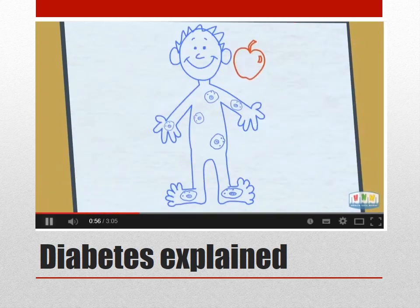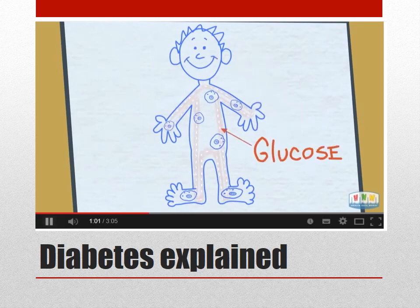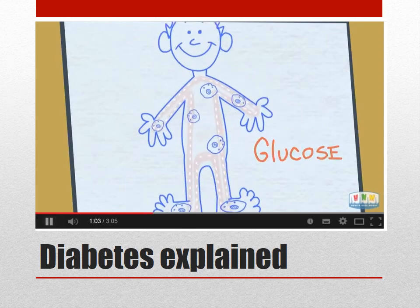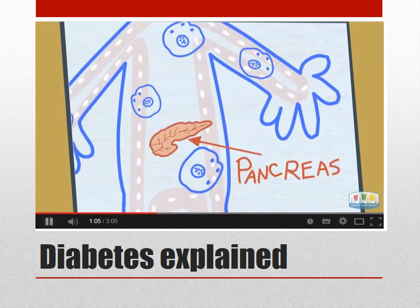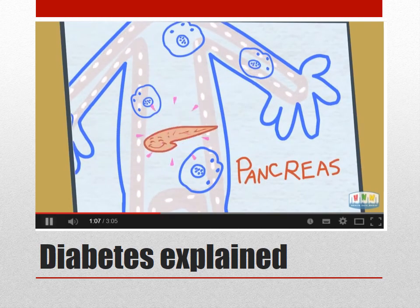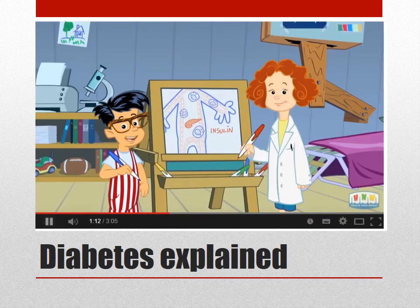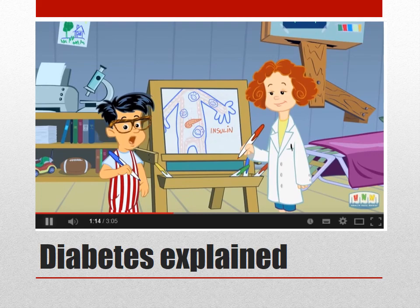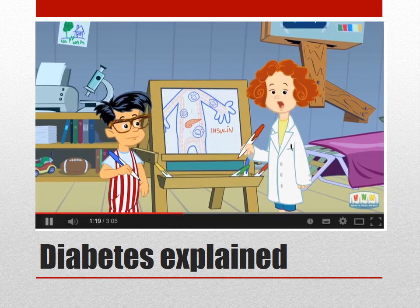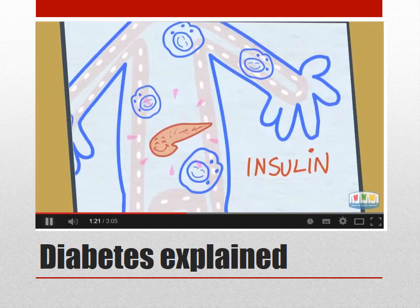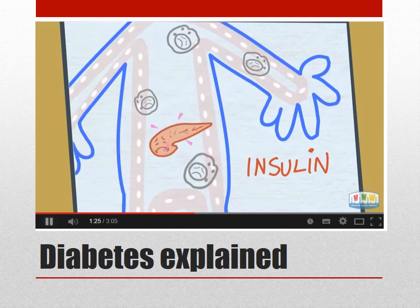The food you eat is turned into sugar called glucose, and glucose travels to all of your cells through the bloodstream. Inside your body is an organ called the pancreas. The pancreas makes insulin, which helps all those cells in your body use the glucose. Your cells need the glucose to grow and get the power they need. If you have diabetes your body has trouble controlling the level of glucose in your blood - either your pancreas isn't making enough insulin or your cells aren't reacting to the insulin the way they should, so there's too much glucose in your blood.